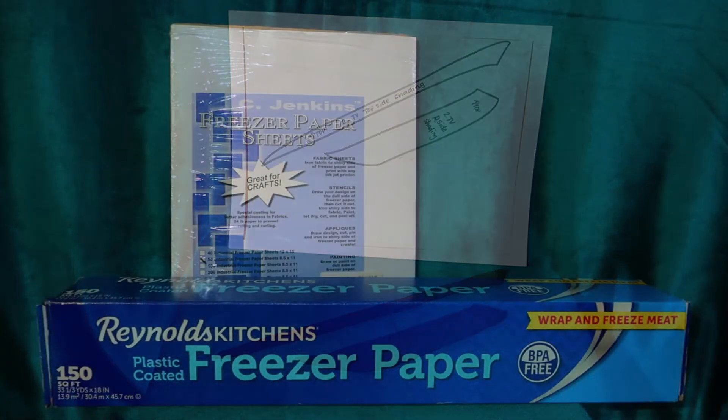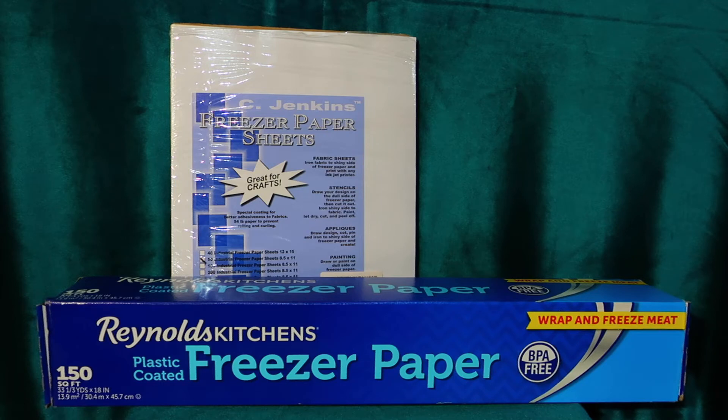Freezer paper comes in two formats. You can buy it on the roll and you can buy it pre-cut in 8.5 by 11 inch sheets. Both can be found on Amazon and both work equally well.